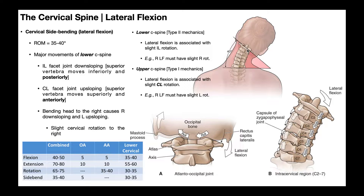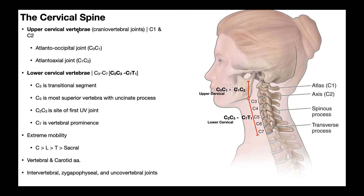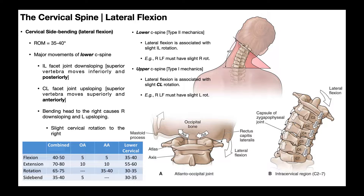When thinking about the biomechanics of this movement, it's more helpful to focus on the lower cervical spine. The upper cervical spine is defined as the upper two joints: the atlano-occipital joint (between the occiput or C0 and the atlas, C1) and the atlano-axial joint (between the atlas and the axis, C2). Everything below that — from the C2-C3 segment down to C7-T1 — is the lower cervical spine relevant for lateral flexion and rotation.